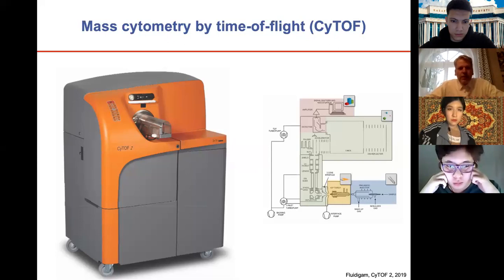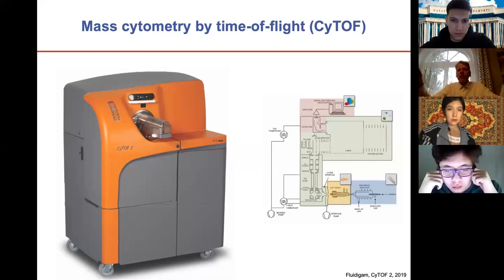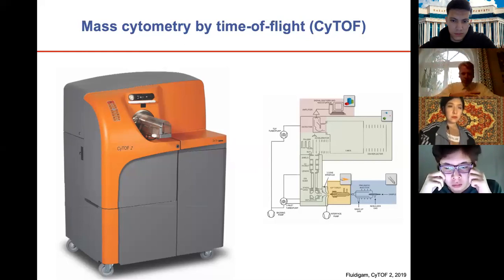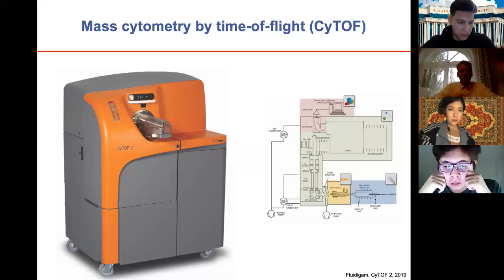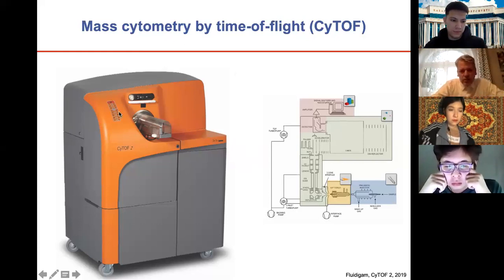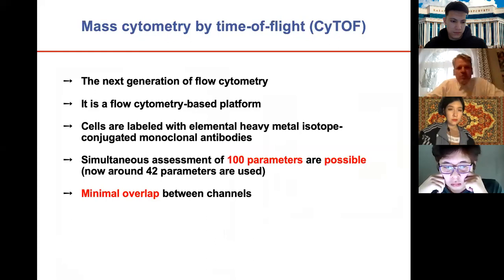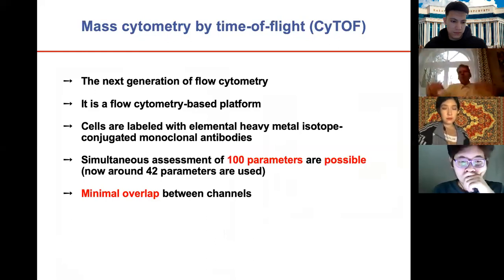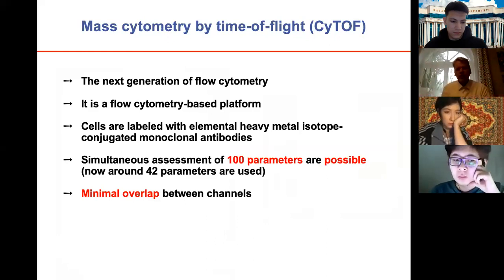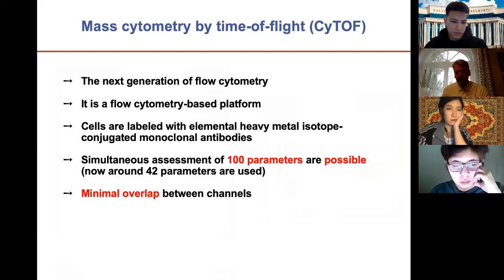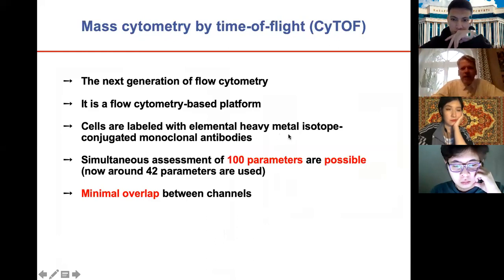The next part: flow cytometry by time of flight — or CyTOF in short. It is a combination of flow cytometry and mass spectrometry, also called mass cytometry by time of flight. We have used the CyTOF 2 device at the University of Ulm in collaboration. The key advantage over conventional flow cytometry is that instead of fluorophores attached to antibodies, CyTOF uses elemental heavy metal isotopes conjugated to monoclonal antibodies.